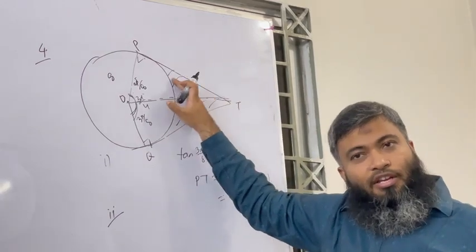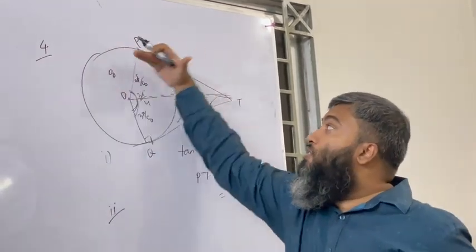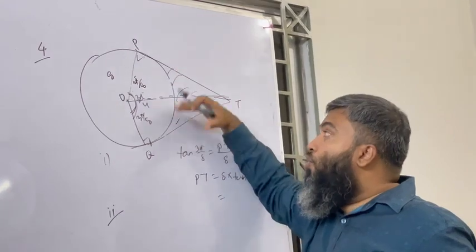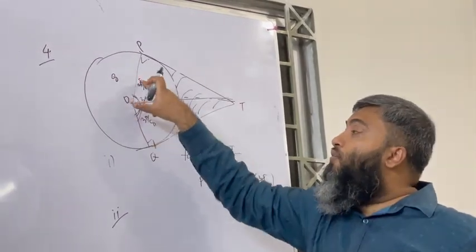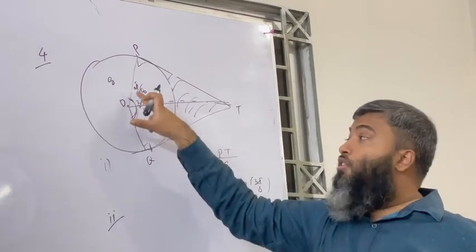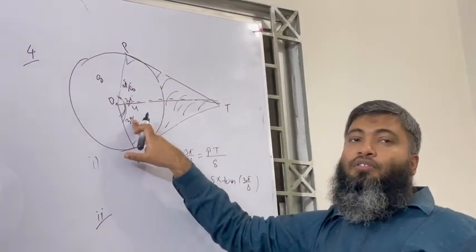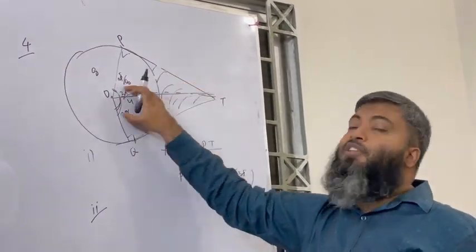The triangle area is half into base into height. So this is the total quadrilateral area. It's half r squared theta. It's 3 by 8. Then the other triangle is half.